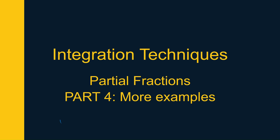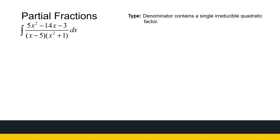In this last video on partial fractions, we're going to look at the case where we've got an irreducible quadratic in the denominator. If we look at this integral, firstly it's proper — if I multiply it out, my denominator is to the power 3 and my numerator is to the power 2, so I do not need long division. But the denominator has an x squared plus 1, which I cannot factorize further, so we call it irreducible.